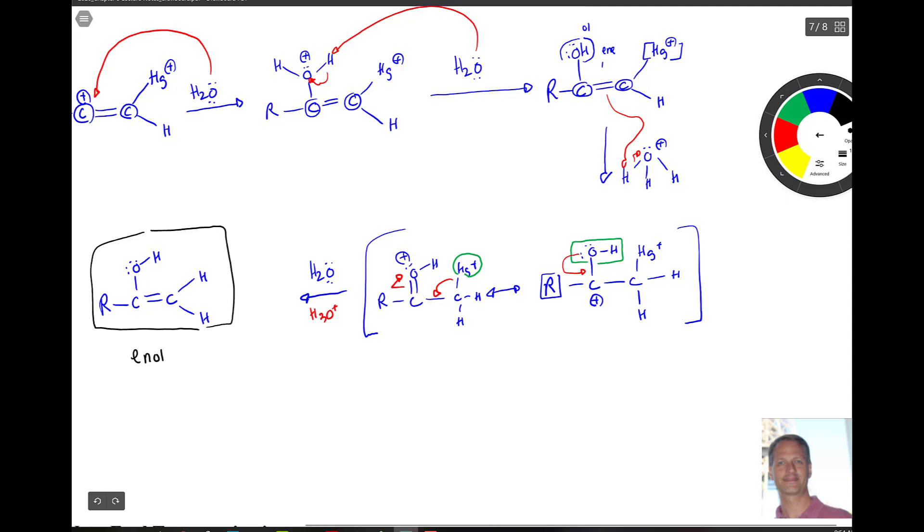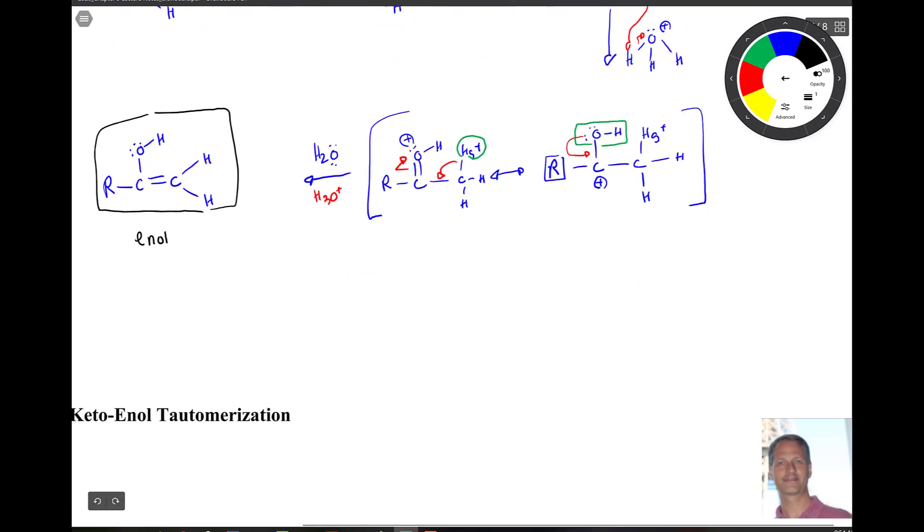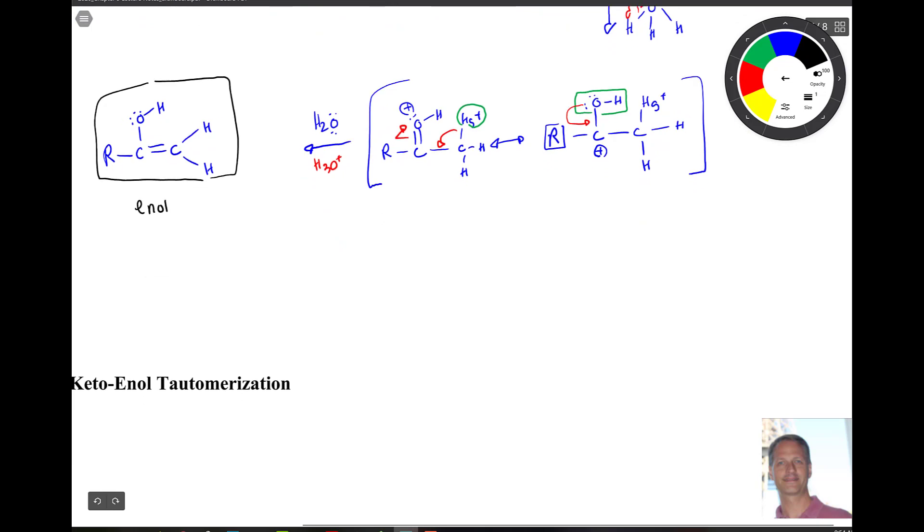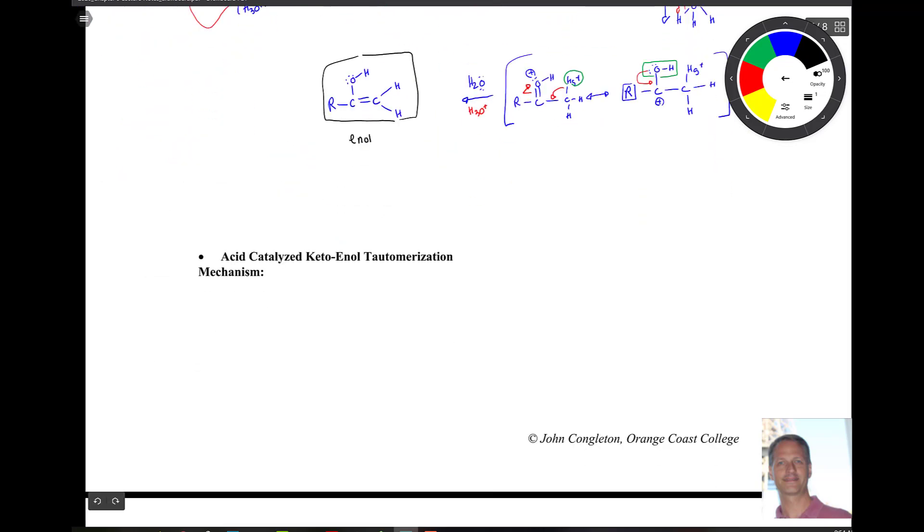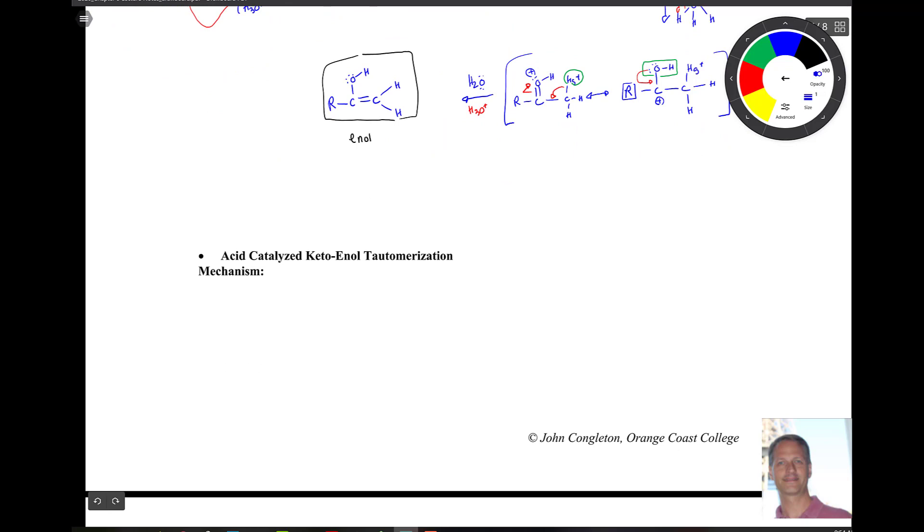So, remember that we mentioned up above that the enols are typically unstable. There's a few exceptions to that rule. But typically they want to become the keto form. So because that enol is in the presence of water and H3O plus, we see a reaction called acid catalyzed keto-enol tautomerization, sometimes just called tautomerism.